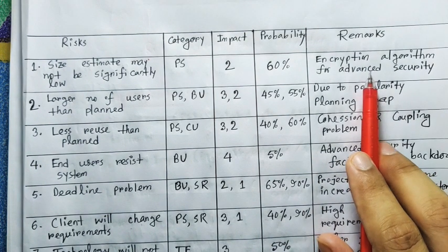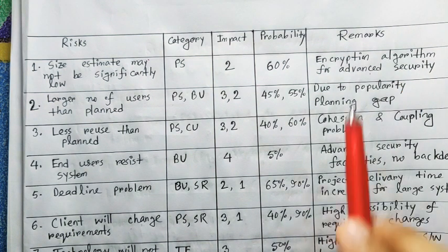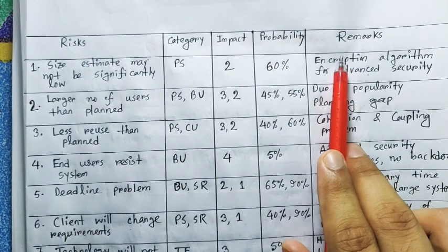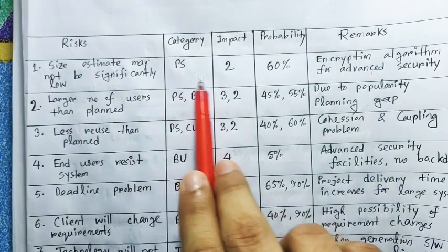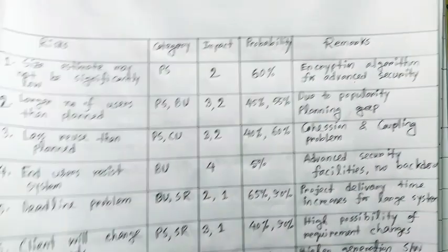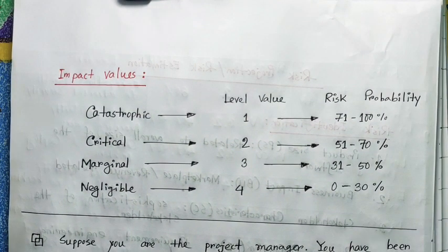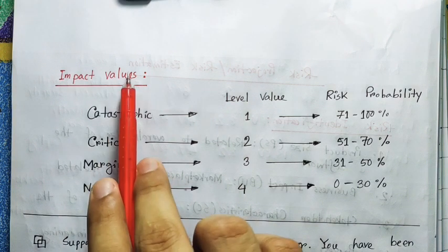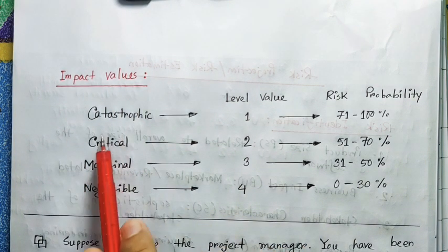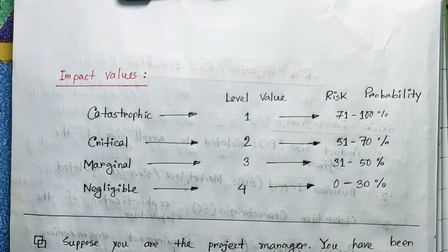If you want to use any compression algorithm, you can use the software. So, we can use the risk column and the remarks column. Now, we can use the other three columns to fill up. If you know the first tutorial, we can use the next tutorial. So, the impact value — the 4th category is the impact value. The identification level is the same as the risk probability.